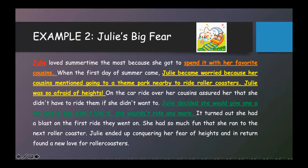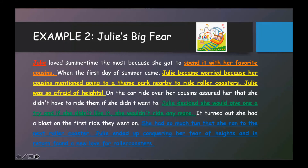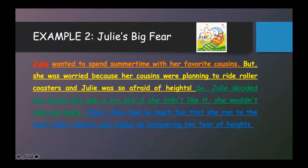Now, how did the story end? Julie had so much fun that she ran to the next roller coaster — she had conquered her fear of heights. Now, let's put all the elements together. The summary should look something like this. Julie wanted to spend summertime with her favorite cousins, but she was worried because her cousins were planning to ride roller coasters and Julie was so afraid of heights. So, Julie decided she would give one a try and if she didn't like it, she wouldn't ride anymore. Then, Julie had so much fun that she ran to the next roller coaster and ended up conquering her fear of heights.